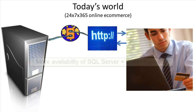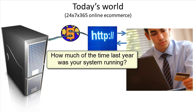You want your database available as much as possible. Availability is commonly defined as the percentage of uptime in a given period of time, like a year, quarter, month, or day. In other words, there are 365 days in a year — was your system up 364 of them, or all 365?